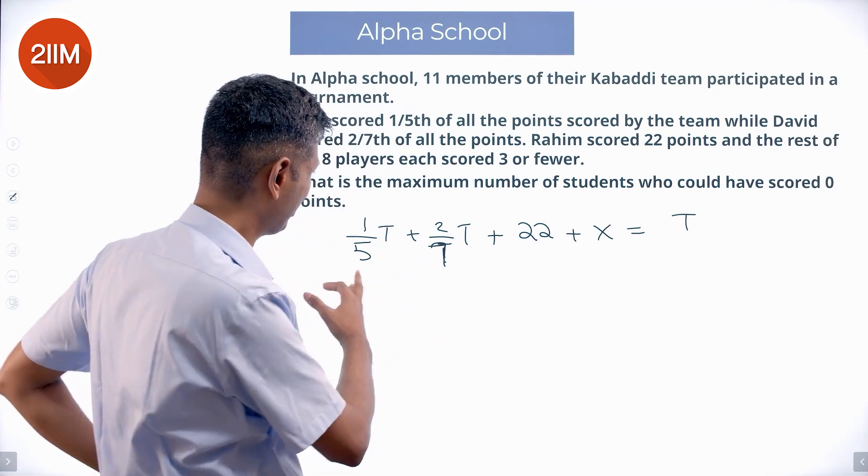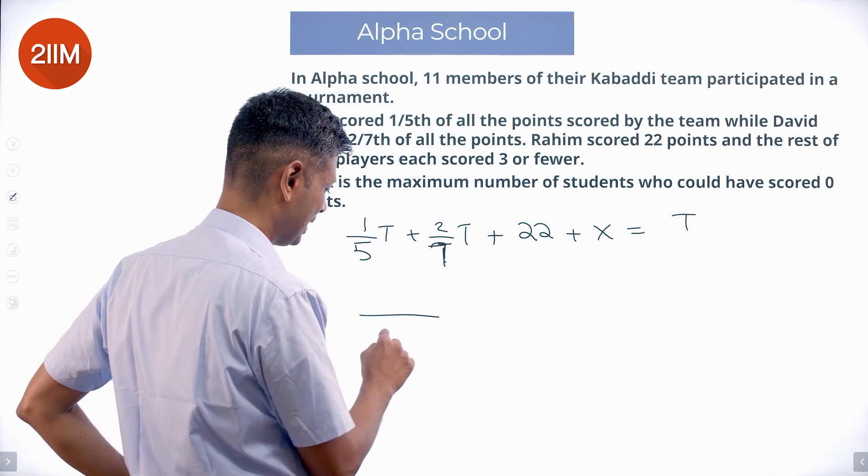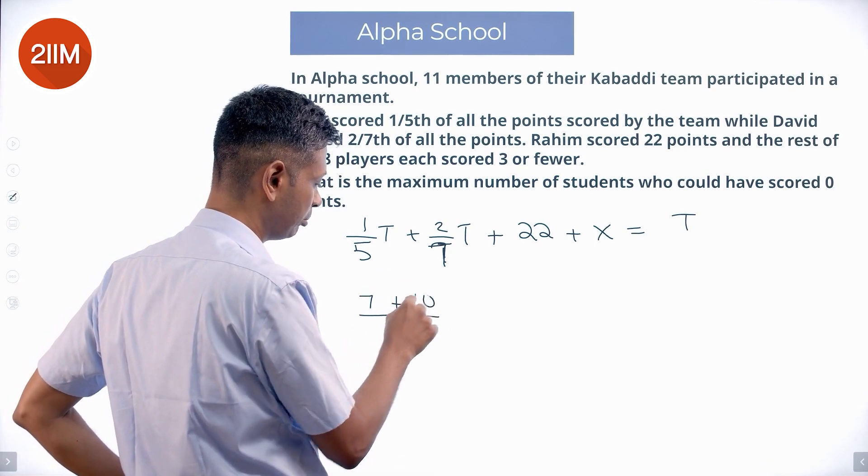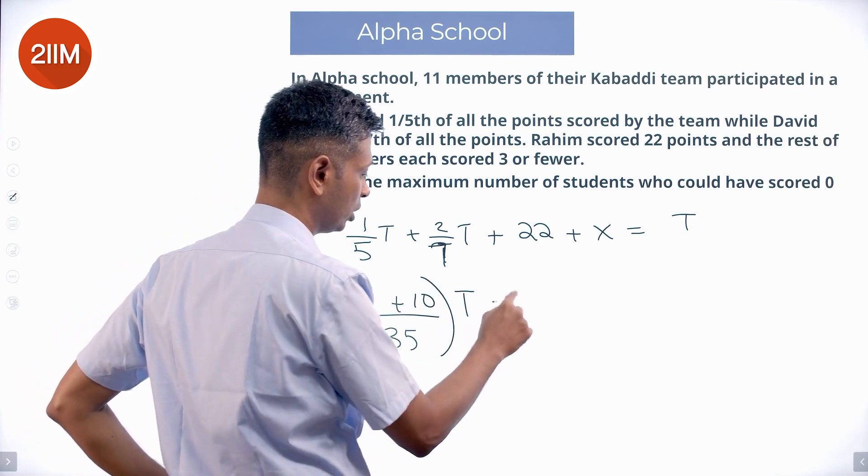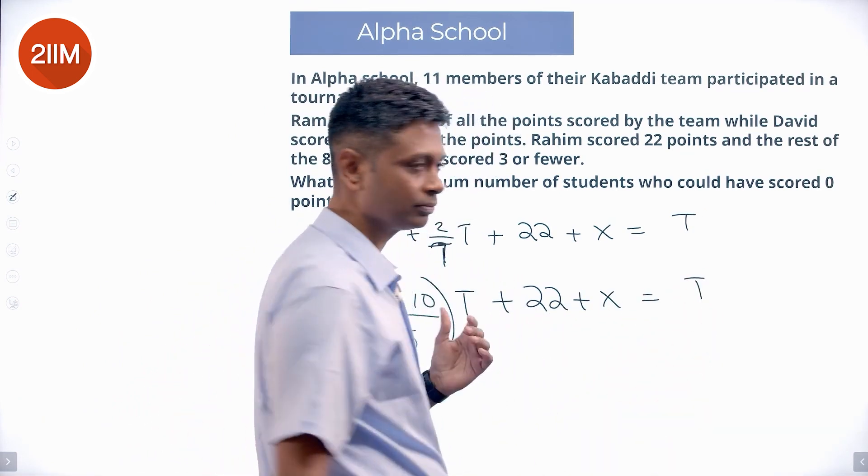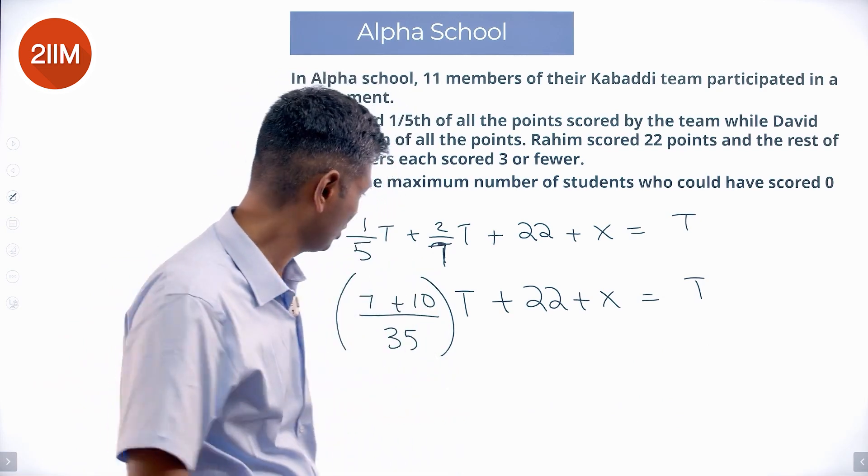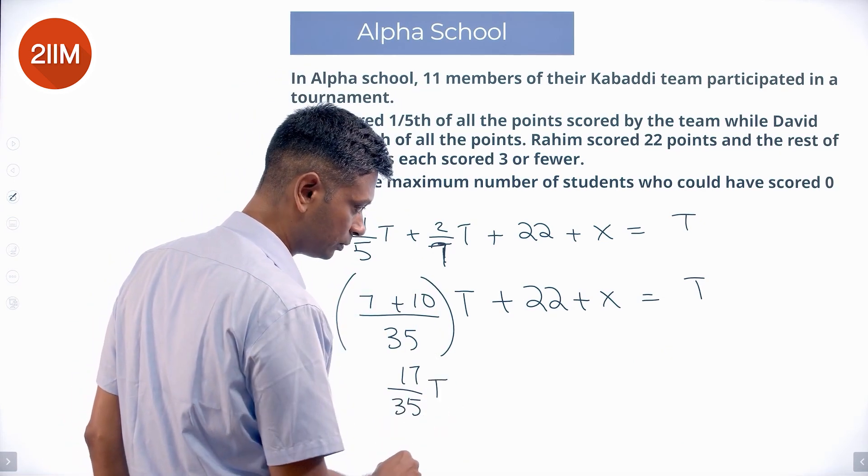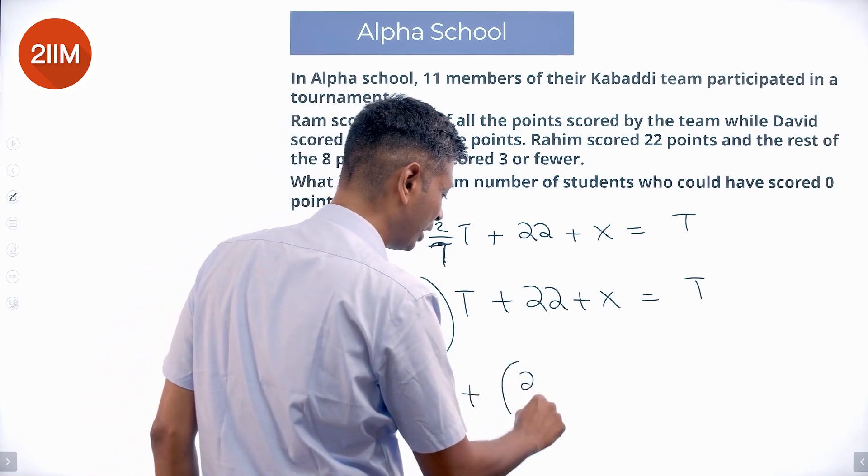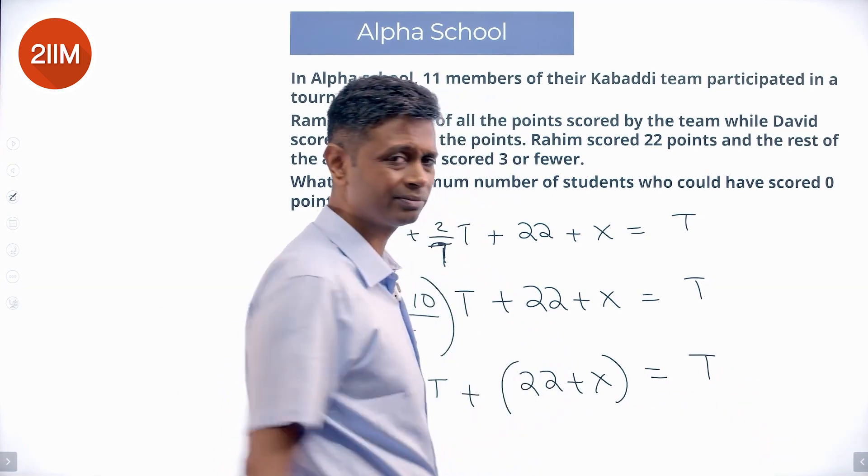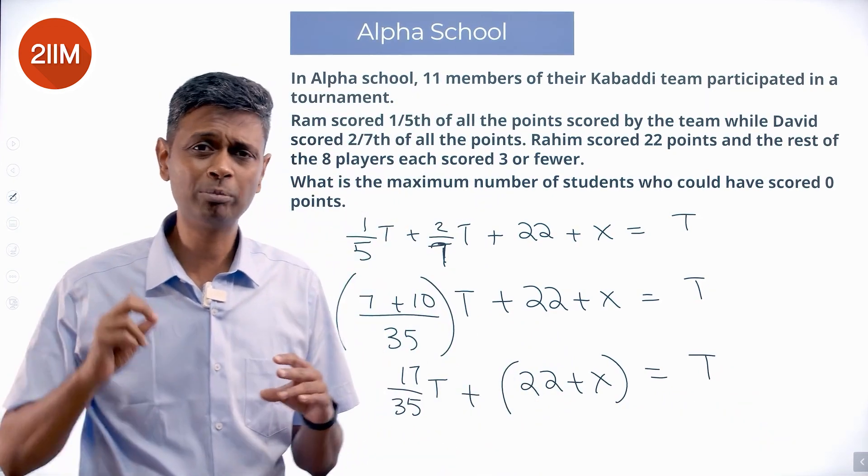I want to find this one by five plus two by seven. The LCM is 35. Seven by 35 plus 10 by 35 times total plus 22 plus X equal to total. So these two guys, Ram and David together, score 17 by 35 of total and then the remaining is 22 plus X. Brilliant.